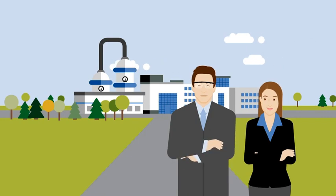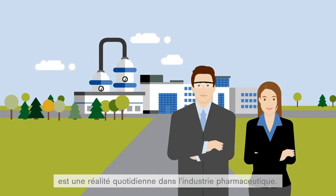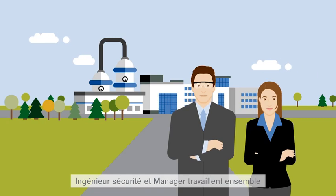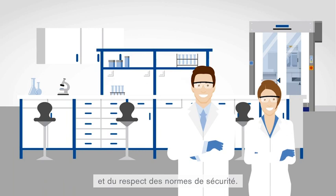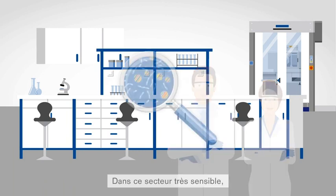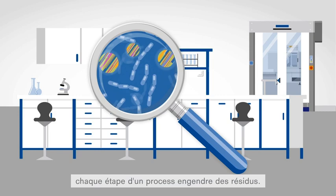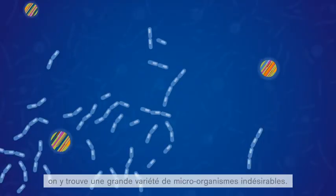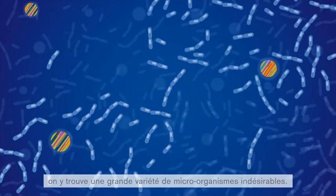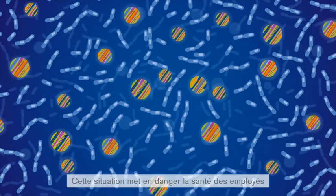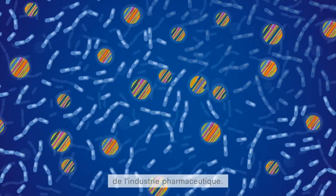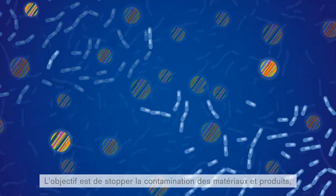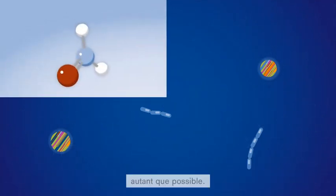Working with hazardous substances is a daily reality in the pharmaceutical industry. A safety engineer and manager work together to ensure that processes run smoothly and high safety standards are met. In this highly sensitive industry, each individual process step leaves behind remnants — a variety of unwanted microorganisms. This situation endangers the health of employees and falls below the high standards for quality and hygiene in the pharmaceutical industry. The key task is to stop the contamination of materials and products as much as possible.